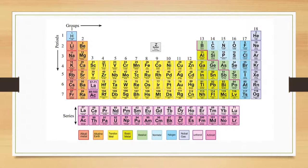Gallium, symbol Ga. Germanium, symbol Ge. Arsenic, symbol As. Selenium, symbol Se. Bromine, symbol Br. Krypton, symbol Kr. Rubidium, symbol Rb. Strontium, symbol Sr. Yttrium, symbol Y. Zirconium, symbol Zr. Niobium, symbol Nb. Molybdenum, symbol Mo. Technetium, symbol Tc.